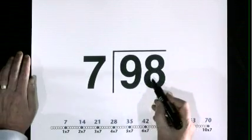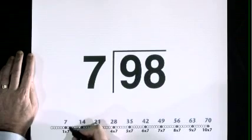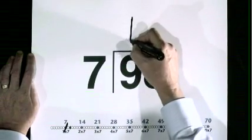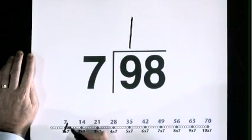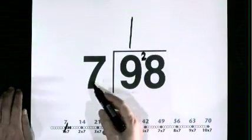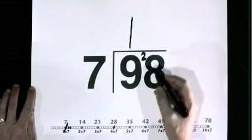98 divided by 7. 9 lives here. 7 goes into 9, 1 time, remainder 2. 7 goes into 28, 4 times.